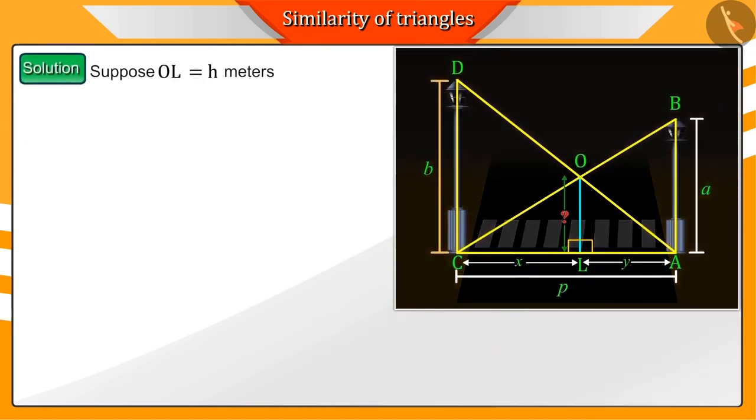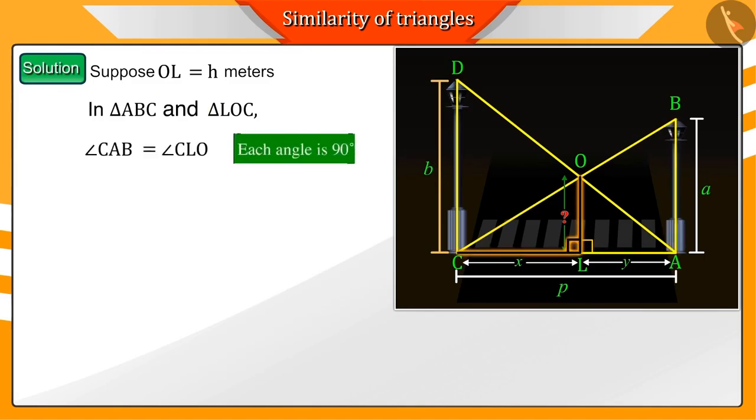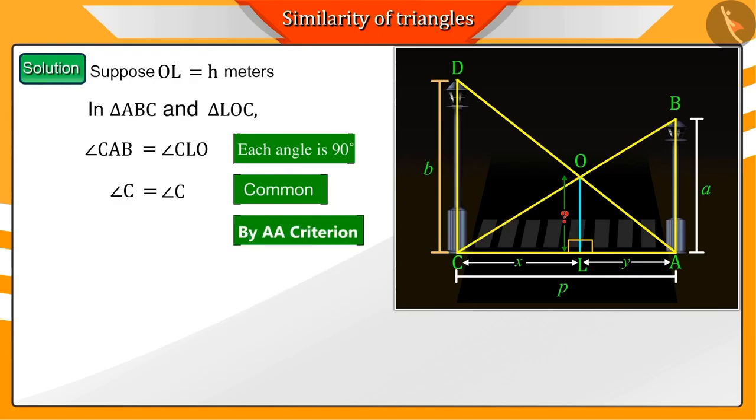Suppose OL is h meters. If we look at the triangles ABC and LOC, the corresponding angles CAB and CLO are mutually equal. Also angle C is common in both triangles. Hence according to AA criterion, the triangle CAB and the triangle CLO are similar.